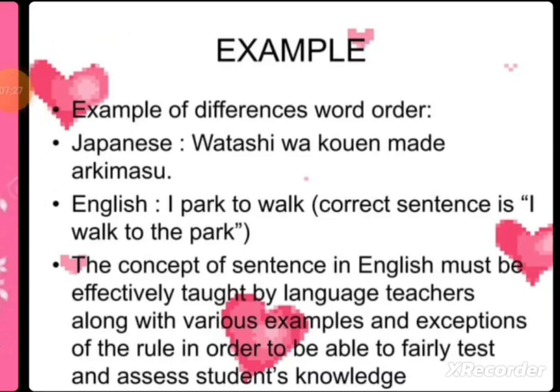How do languages have different word orders? You can see different sentences from different languages. In Japanese, the equivalent sentence structure translates to English as 'I park to walk,' whereas the correct English sentence is 'I walk to the park.' In English, the sentence order is Subject-Verb-Object. If you follow the Japanese sentence structure, you get an incorrect English sentence. The concept of sentence order in English must be effectively taught by language teachers, along with various examples and exceptions, in order to fairly test and assess students' knowledge.